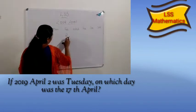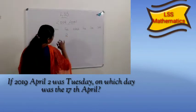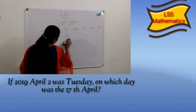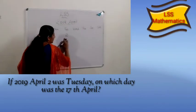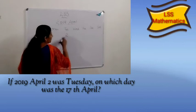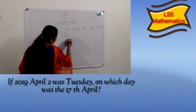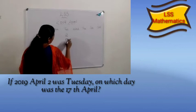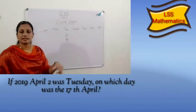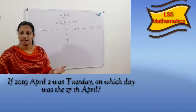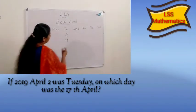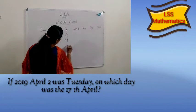Tuesday, second. Then next Tuesday — how many days after? Yes, 7 days after. So 2 plus 7 is 9. Then after 9, the next Tuesday — which day? Yes, 7 days. So that is 16.